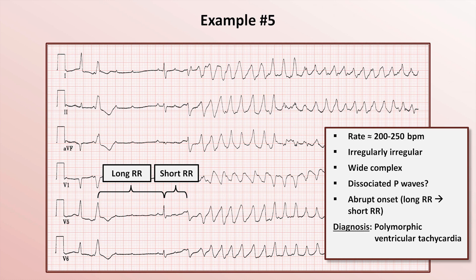The two RR intervals immediately preceding the rhythm onset consist of one unusually long RR interval and one unusually short one. This specific pattern means that this polymorphic VT is the torsade des pointes subtype, which is almost universally associated with a prolonged QT interval — though in this particular example, it's impossible to say what that QT interval actually is.